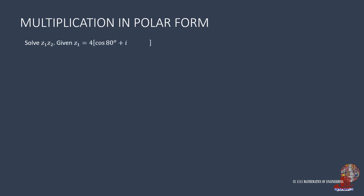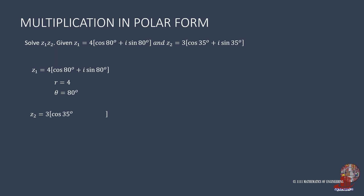The first example requires the product of z1 and z2, given z1 as 4 times cosine of 80 degrees plus i sine of 80 degrees, and z2 as 3 times cosine of 35 degrees plus i sine of 35 degrees. From the first complex number, the modulus is 4 and the argument is 80 degrees. The second complex number has r of 3 and theta of 35 degrees.